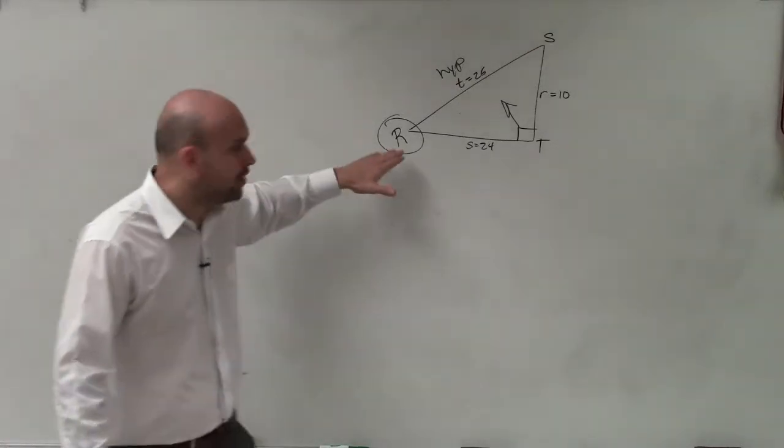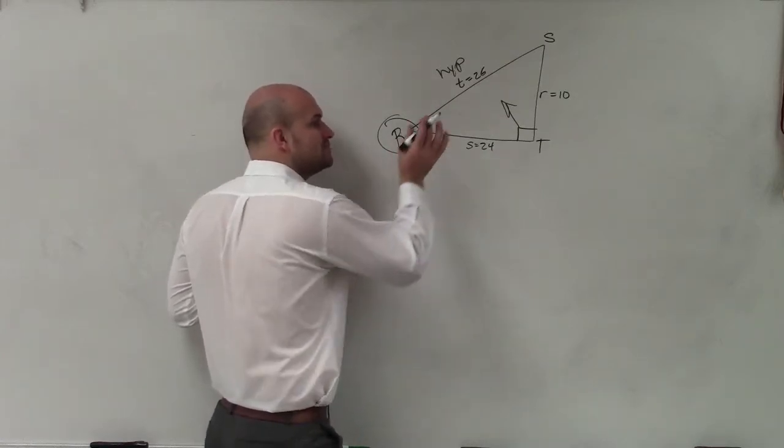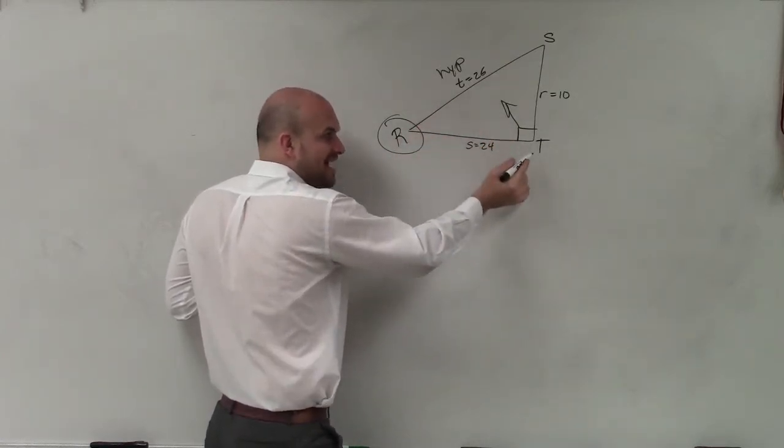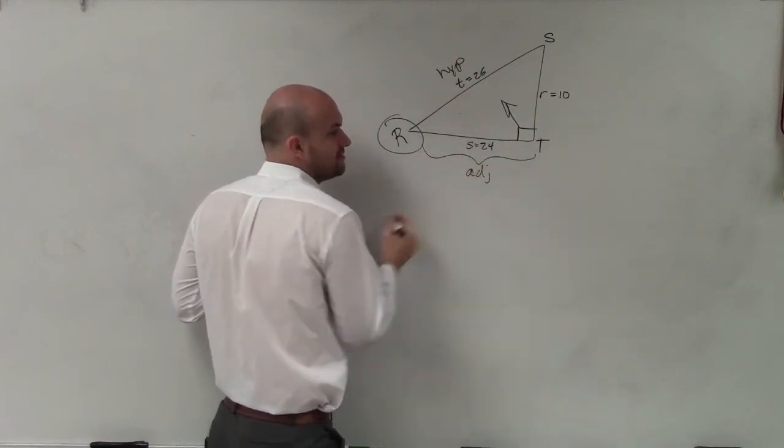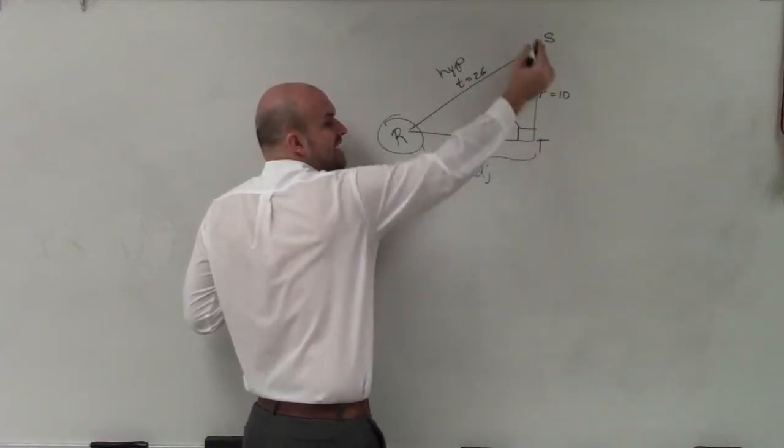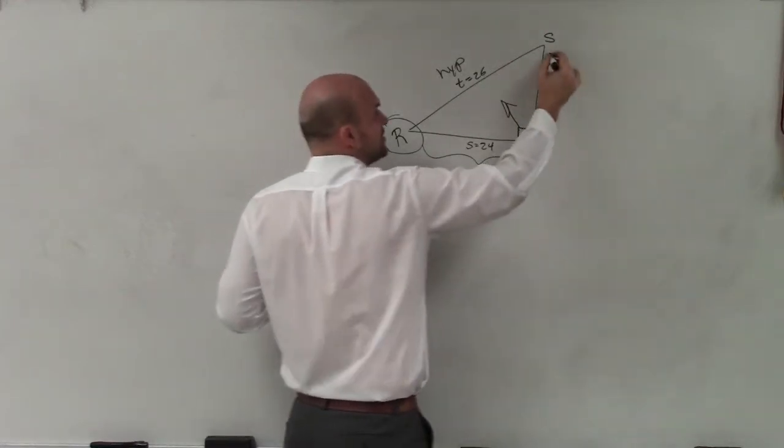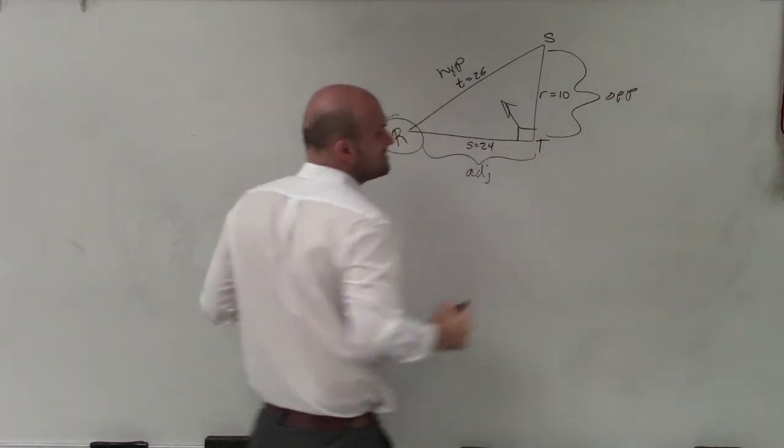Since I'm talking about angle r, the adjacent, remember, is the side length between my angle and the 90-degree angle. So that is my adjacent side for angle r. And this side length, see how this side length is not connected to my angle r? So therefore, it is opposite of my angle r. So we call it the opposite side.